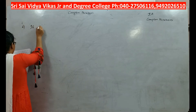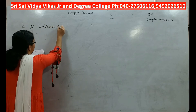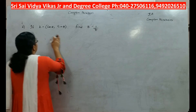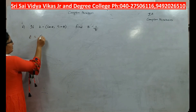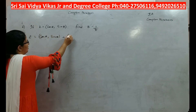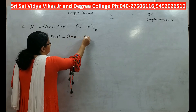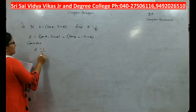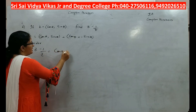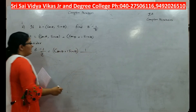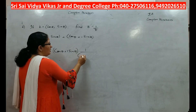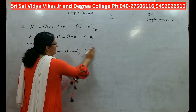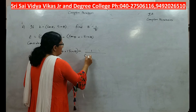Next problem: if z is equal to (cos θ, sin θ), you have to find z minus 1 by z. What is z here? z is equal to (cos θ, sin θ), that is equal to cos θ plus i sin θ. Consider z minus 1 by z: z equals cos θ plus i sin θ, and we have minus 1 by (cos θ plus i sin θ).